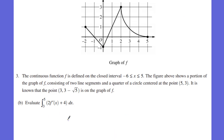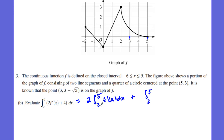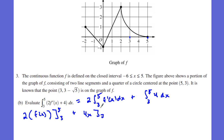Now let's go to B. B is asking us to evaluate an integral from negative three to five of two f prime of x plus four dx. I can split this up using the addition rule. We get two times the integral from three to five of f prime of x dx, plus the integral from three to five of four dx. The integral of f prime of x is just f of x, and the integral of four with respect to x is 4x, going from three to five.